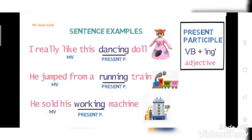Now, coming to some examples — sentence examples in present participle. Present participle में आपको verb plus ing करना होता है, and then it will function like an adjective. See examples: 'I really like this dancing doll.' Like क्या है, आपका main verb है; dancing आपका present participle है. 'He jumped from a running train' — jump आपका main verb है, running आपका present participle है. 'He sold his working machine' — sold आपका main verb है.